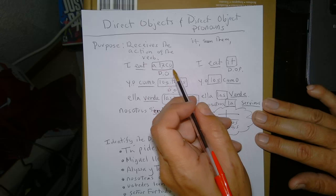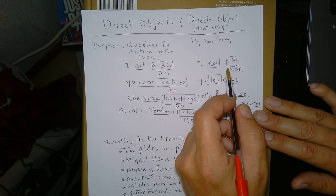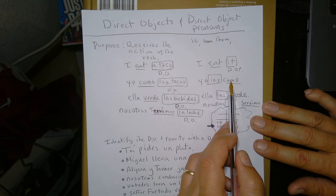So I eat it. What do I eat? The taco. So there's a direct object pronoun. Receives the action. Right here. This is our subject. So, super common. We do this all the time in English. We do it all the time in Spanish. Here's a good example of this sentence.